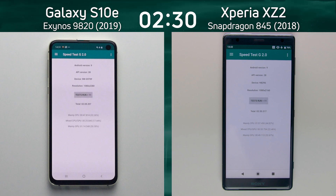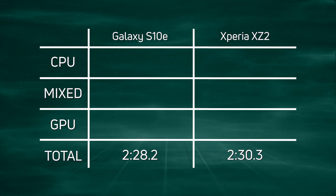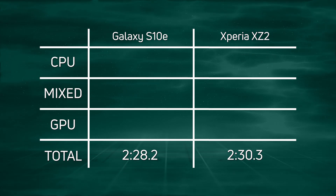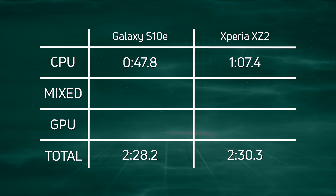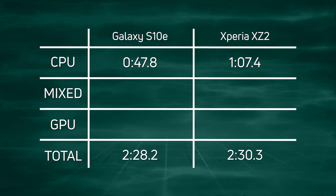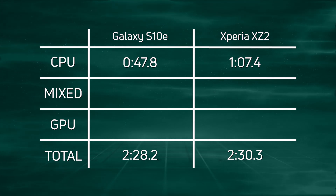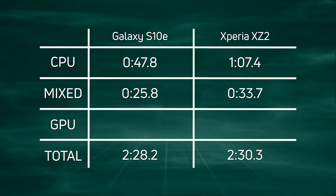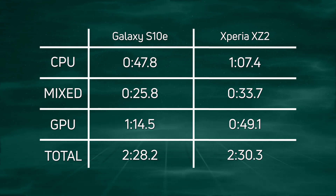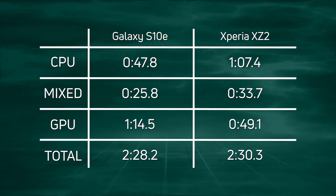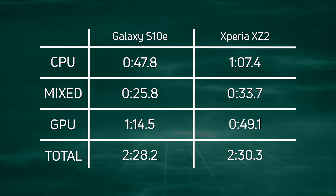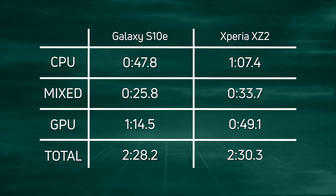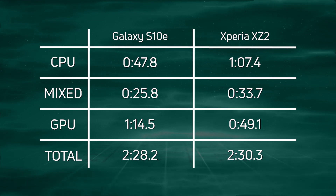Let's break down those times and see exactly what happened. The S10e won with two minutes 28.2 and just over two seconds later the Sony came in with two minutes 30.3. Looking at the CPU score, the S10e posted 47.8 seconds compared to one minute 7.4 seconds for the Sony — a strong CPU win. In the mixed CPU/GPU section, again the Galaxy S10e won: 25.8 seconds compared to 33.7 seconds. But in the GPU section it went the other way — one minute 14.5 seconds for the S10e versus only 49.1 seconds for the Sony. All of that lead built up in the CPU and mixed tests got whittled away until barely did the S10e win, by only two seconds at the very end.